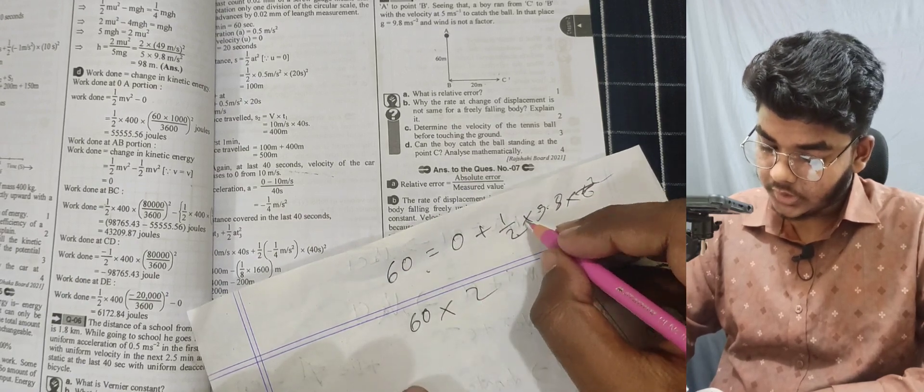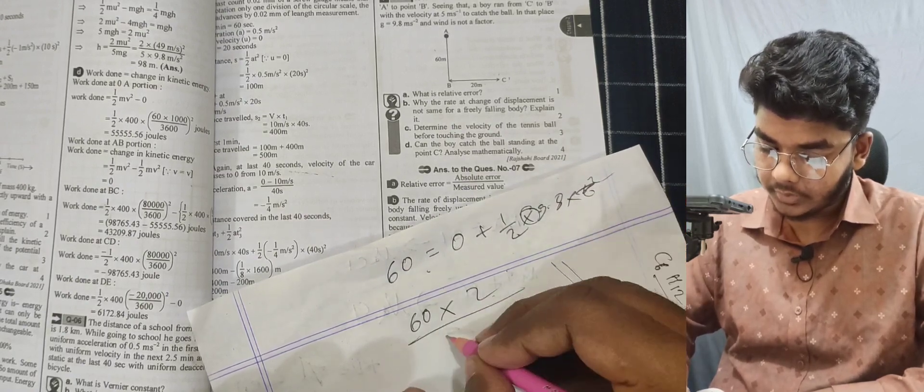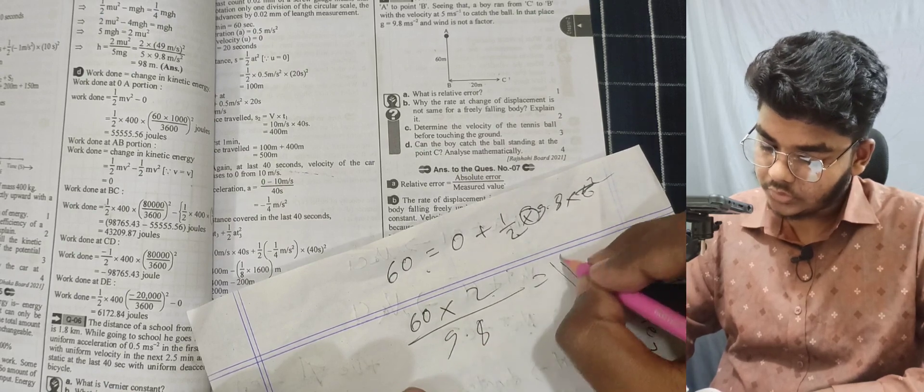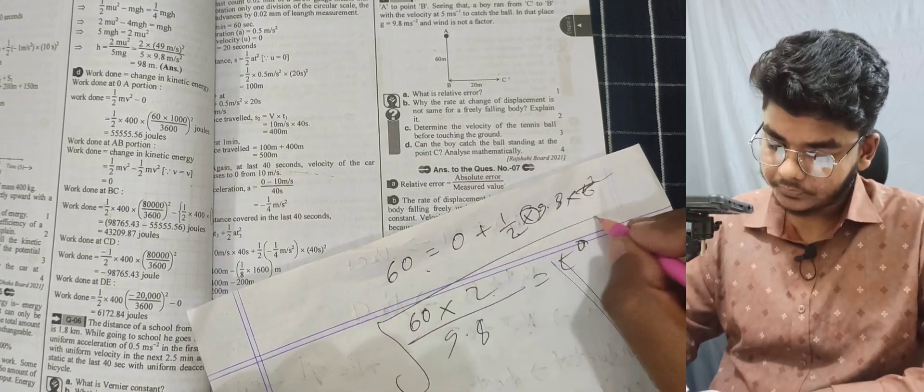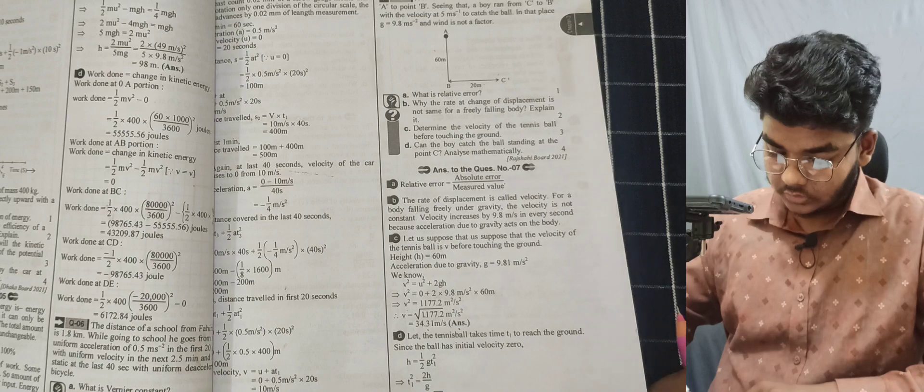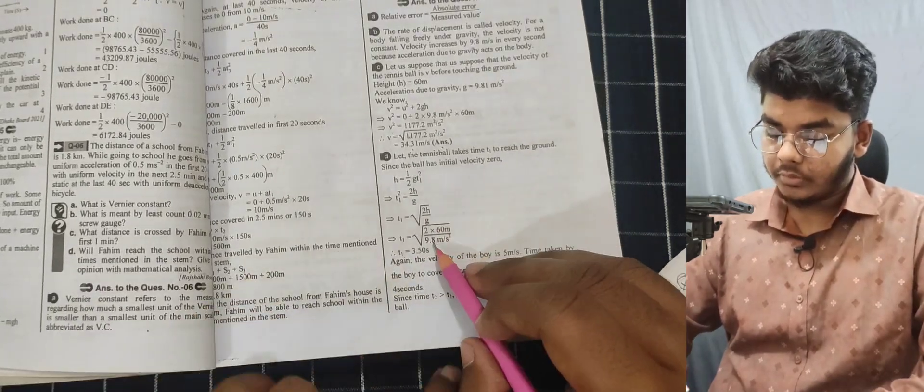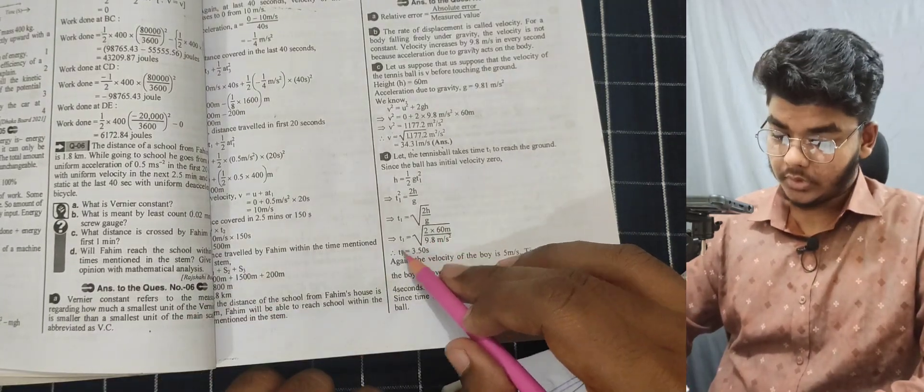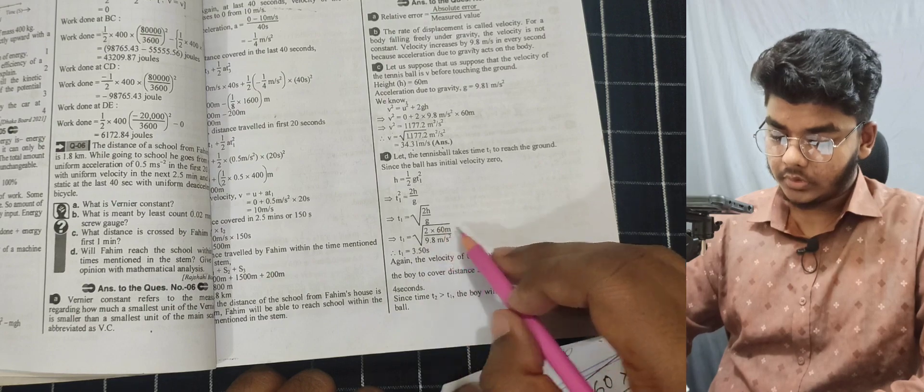60 = ½ × 9.8 × t². Multiplying by 2 gives 120 = 9.8t². Dividing by 9.8 gives t² = 120/9.8. Taking the square root: t = √(120/9.8) = 3.5 seconds.